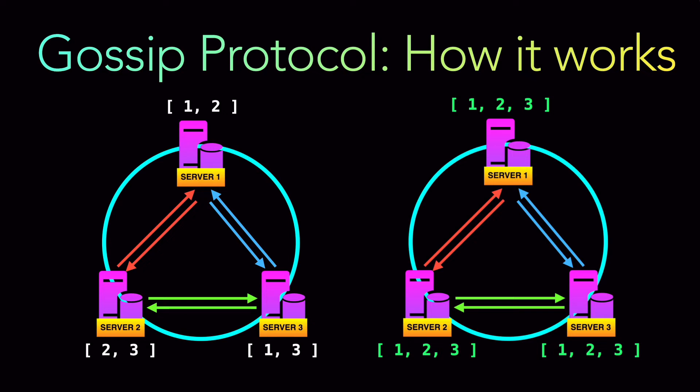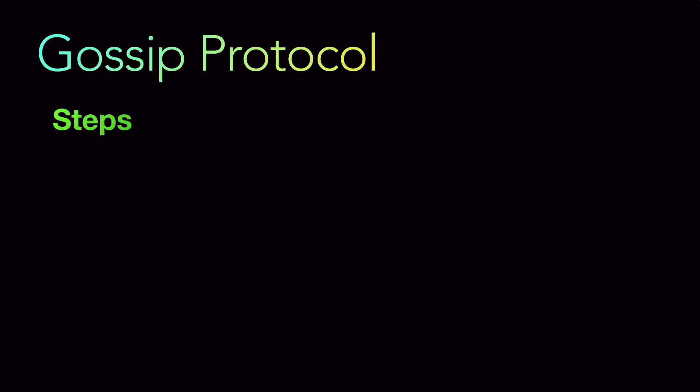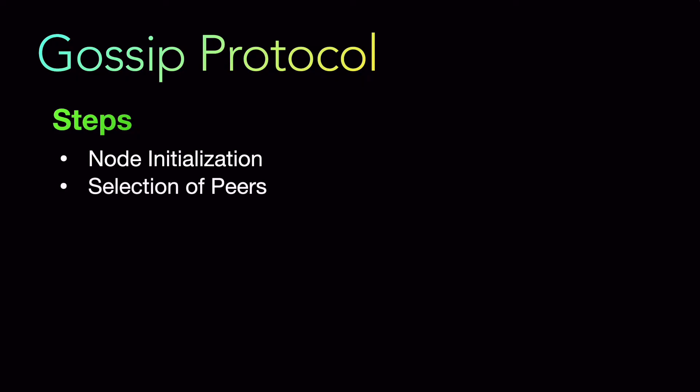Let's look at the steps involved. The first step is node initialization — each node starts with some initial state or information, like server one having only data one and two, and server two having only data two and three. The second step is the selection of peers. In each round, a node randomly selects a peer from its list of all other nodes. For example, server two chose server one, and server one chose server three. They select peers in a regular fashion, and each node ends up selecting all other nodes over time — it's a continuous, repeatable process.